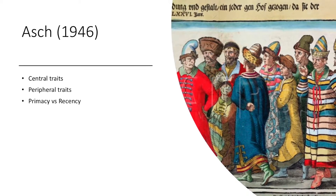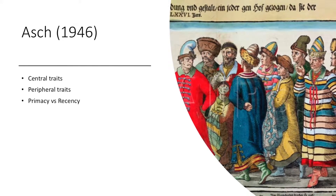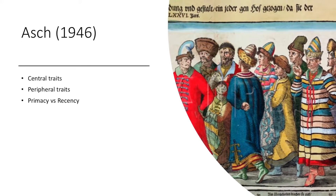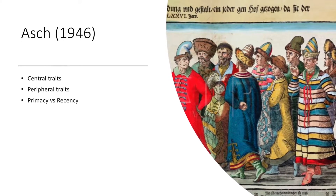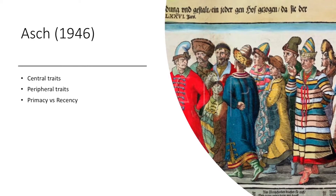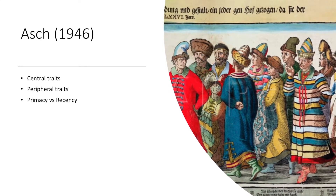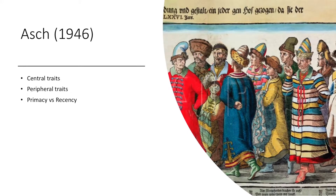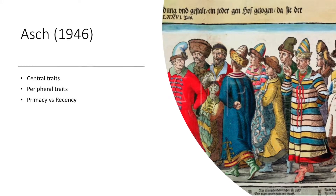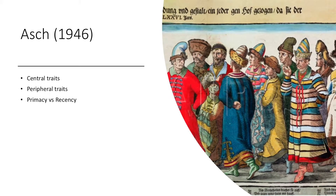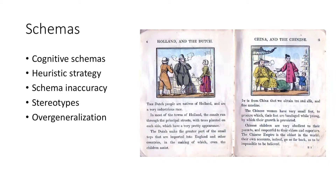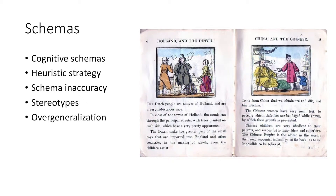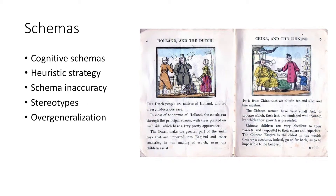We must also consider primacy versus recency, in which the order of presentation has a disproportionate influence on the impression — for example, using positive words to describe an individual at the beginning despite having negative descriptors in the middle, or using positive words at the end. These all come into play in our person perception through cognitive schemas, which are organized expectations or sets about objects, events, and people, helping us to interpret new information.